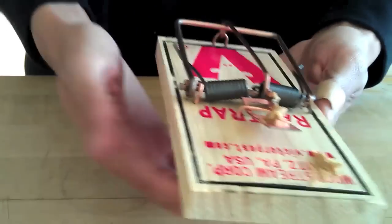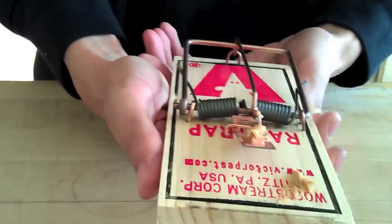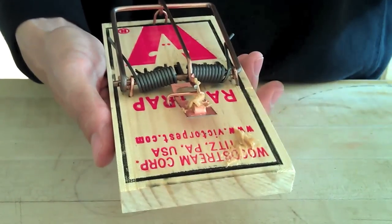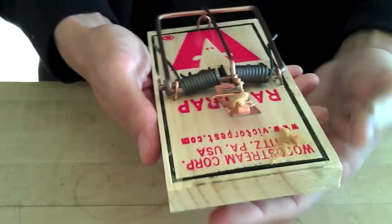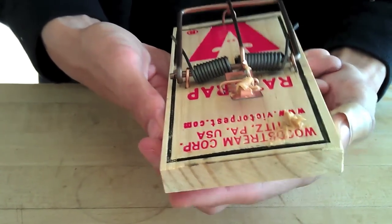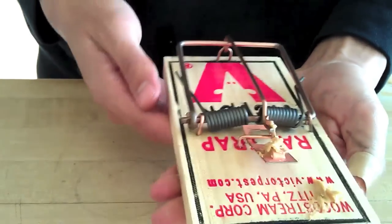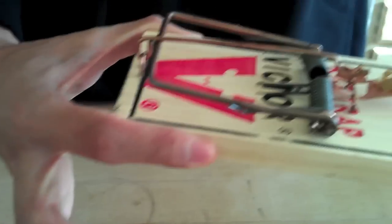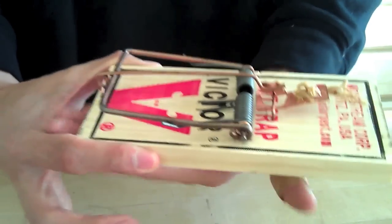And you want to make sure that when you place the trap anywhere, never hold it on this side because if you somehow trigger the locking mechanism, you will definitely hurt yourself. So you want to hold the rat trap always from this side where you pulled the bow back and usually from the bottom.